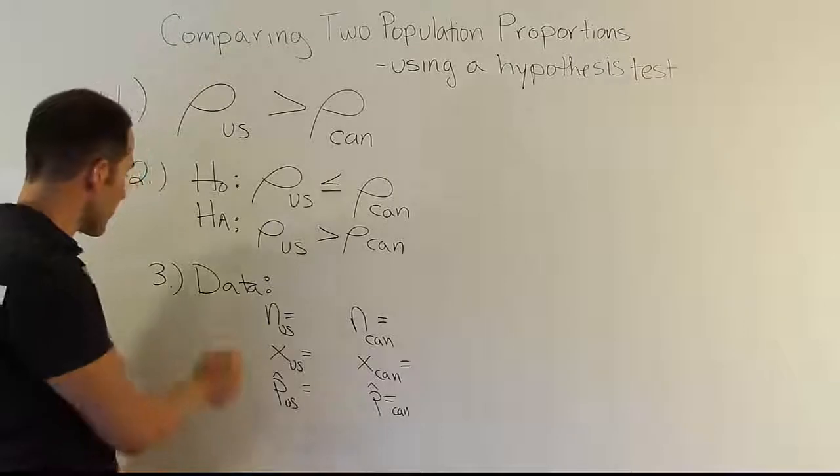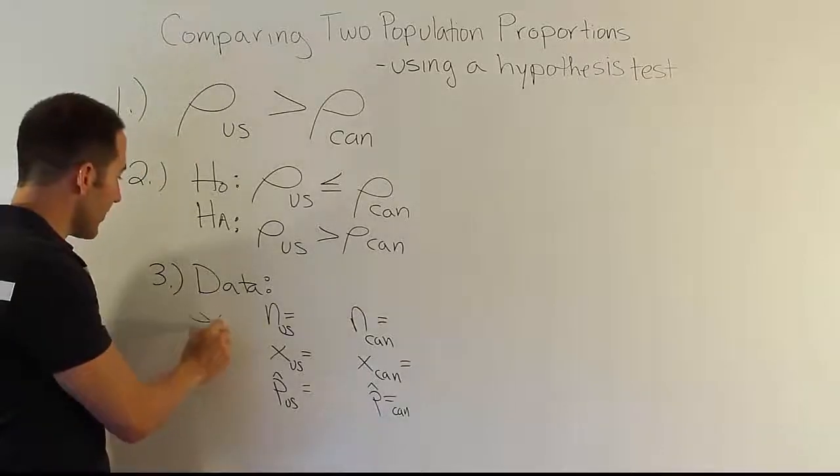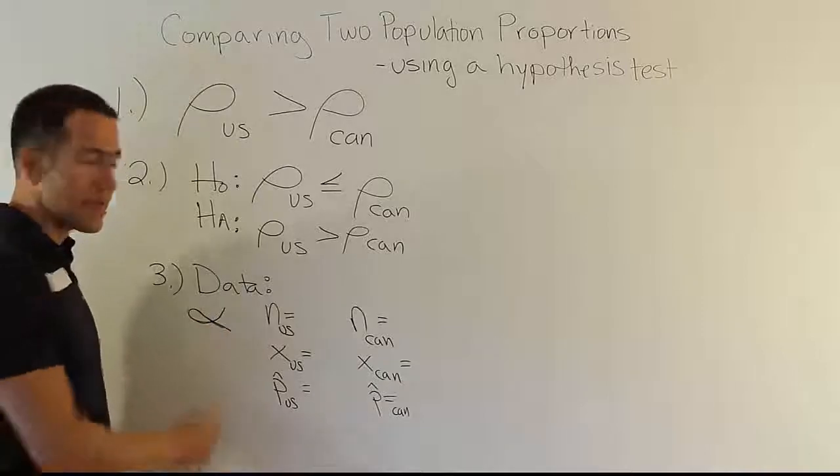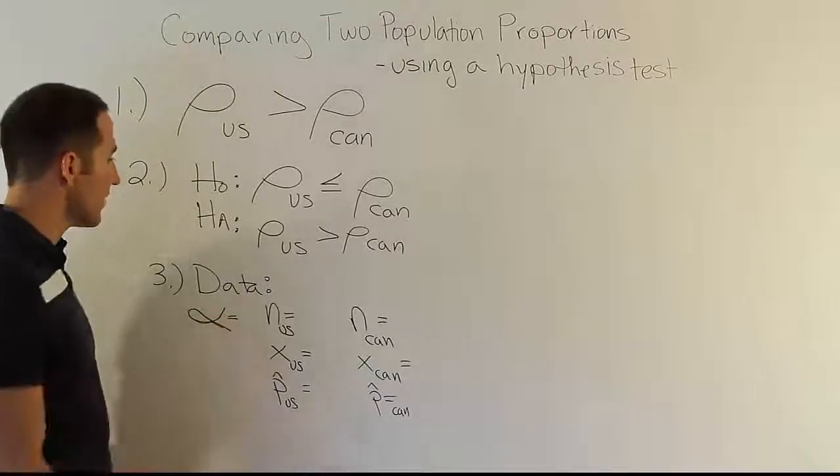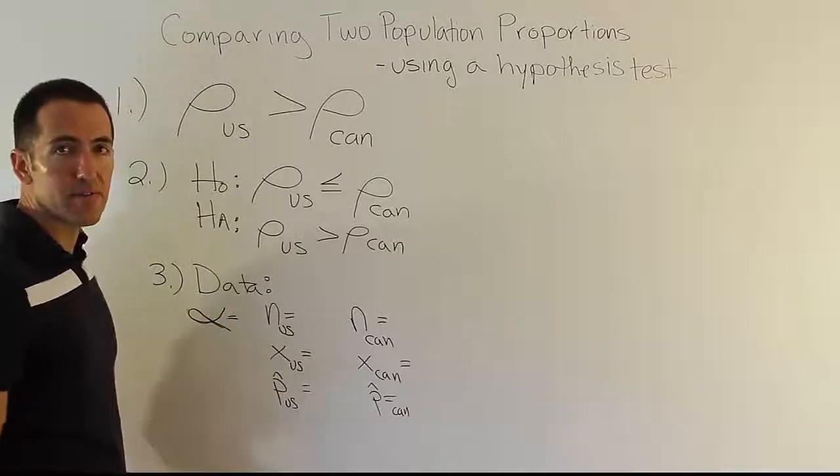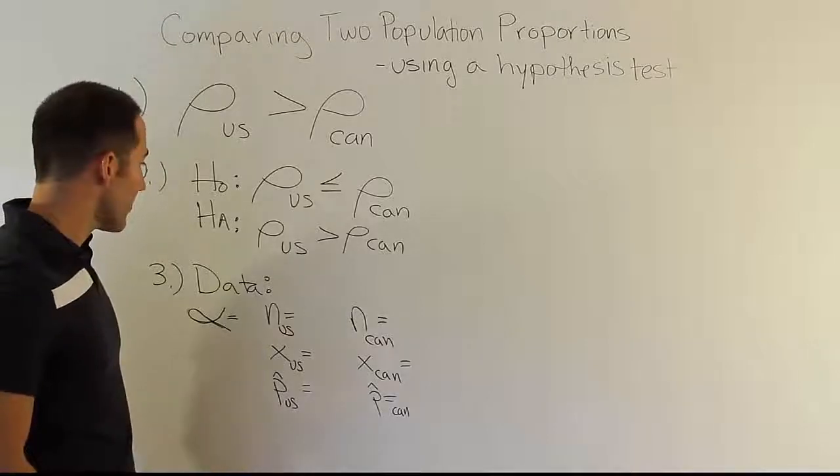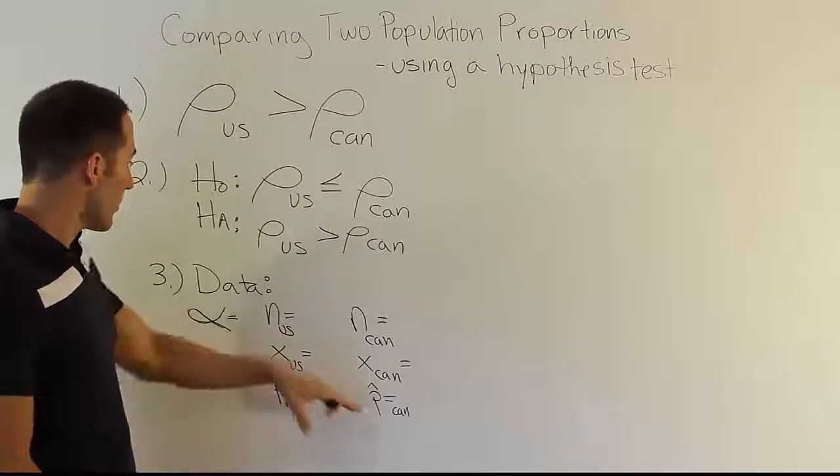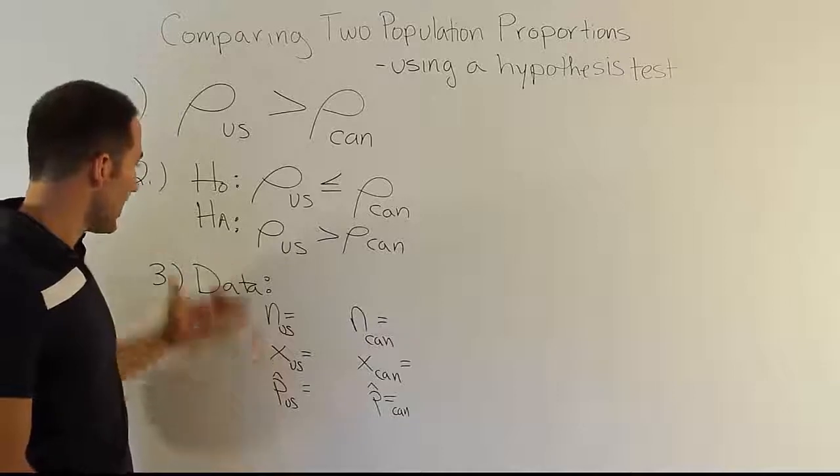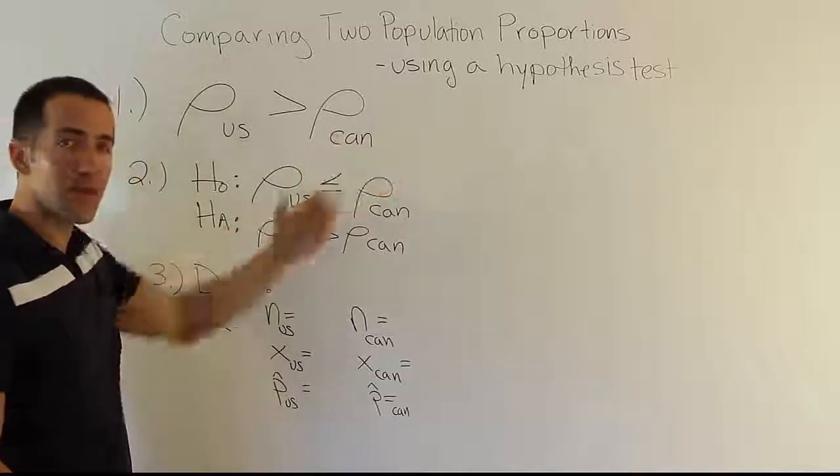And as always, we always have a significance level of alpha in the problems. If it's not given, we use 5%, but we'll also have an alpha. So this is the kind of information that we will collect for the problem. Alright, now from there, what we want to do is to actually take that information and now apply it to a test statistic.